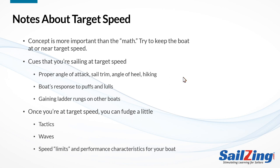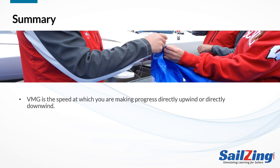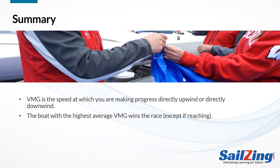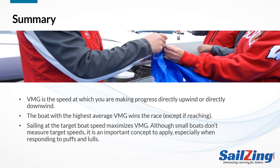Finally, let's talk briefly about situations when you may not want to sail strictly at target speed. These include tactical situations, waves where you might want to foot a little bit to power through, and cases where your boat's speed limits such as hull speed and performance characteristics blur the target speed concept somewhat — we'll talk about this in another post or video. To summarize: VMG is the speed at which you are making progress directly upwind or directly downwind. To win races, you maximize your average VMG unless you are reaching. Sailing at the target boat speed maximizes your VMG — and although small boats don't measure target speeds, it's an important concept to apply, especially when responding to puffs and lulls.